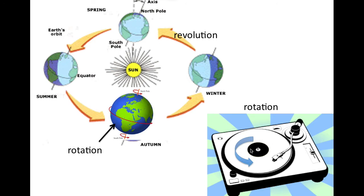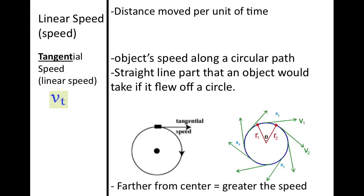Here is another example of rotation: the record spinning on its center axis. When we talk about rotation and revolution, we are discussing speed. We already know what linear speed is — the distance covered per unit of time. When talking about rotation and revolution, we call this tangential speed. It is also known as linear speed because it is the speed you experience while traveling on a circular path.